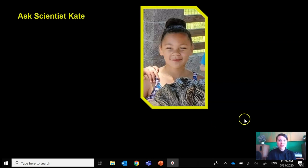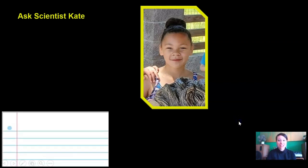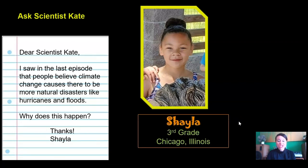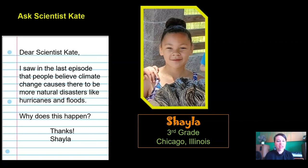Today's letter comes from Shayla, who's in third grade in Chicago, Illinois. Her letter says: 'Dear Scientist Kate, I saw in the last episode that people believe climate change causes there to be more natural disasters like hurricanes and floods. Why does this happen? Thanks, Shayla.' Shayla, this is a great question and a really important one.